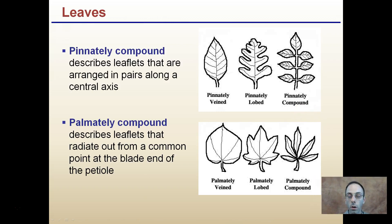Pinnately compound describes leaflets arranged in pairs along a central axis. Palmately compound describes leaflets that radiate out from a common point at the blade end of the petiole. We can see examples: pinnately dentated, pinnately lobed, and pinnately compound — where the compound type shows those distinctive separate leaflet regions. Similarly, palmately lobed shows lobed regions, and palmately compound shows what look like almost individual leaves.